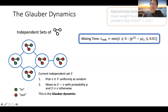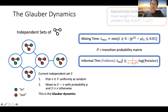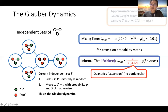To quantify the efficiency of this algorithm, we define the mixing time as the smallest time t such that the distribution of the Markov chain is close to the target distribution in total variation distance. To upper bound this mixing time, researchers often look at the spectral gap of the associated transition probability matrix. To obtain polynomial time algorithms, it suffices to upper bound the inverse spectral gap by a polynomial in the size of the input graph.